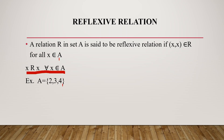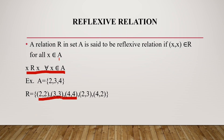A is the set {2, 3, 4}. For the reflexive relation, we need A cross A. The relation R on A must contain (2,2), (3,3), and (4,4). Since x is related to x for all x in A, we can say this relation is a reflexive relation.